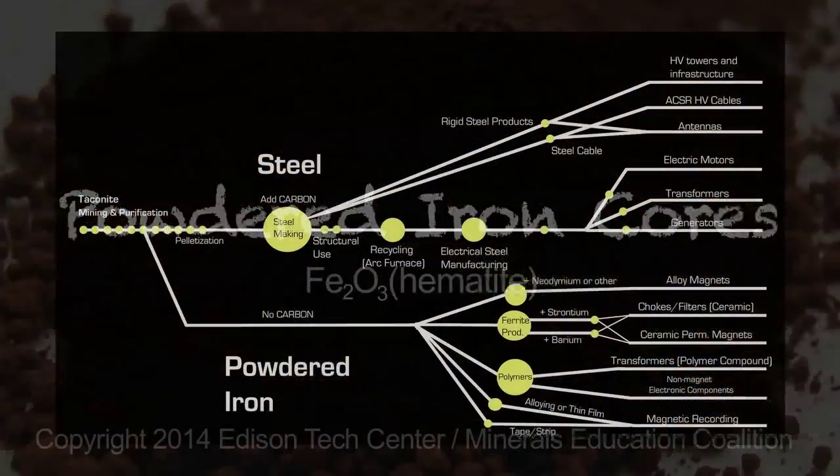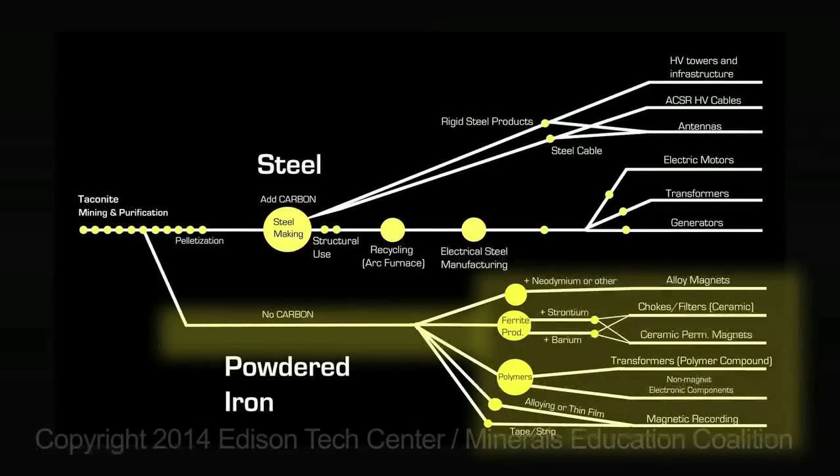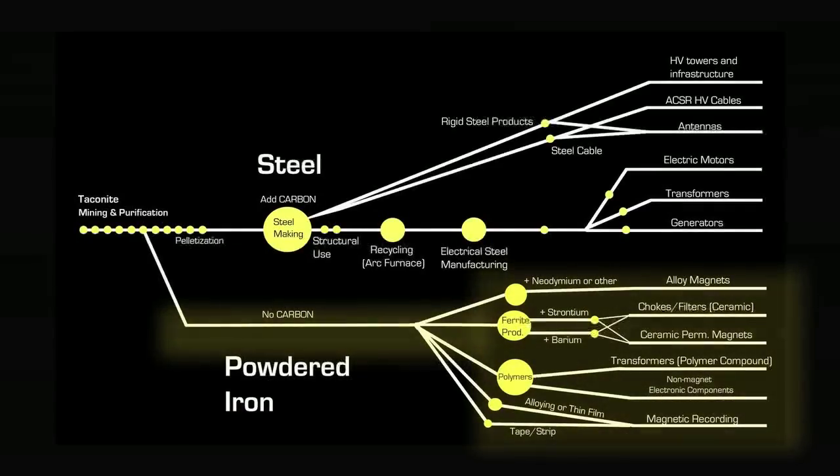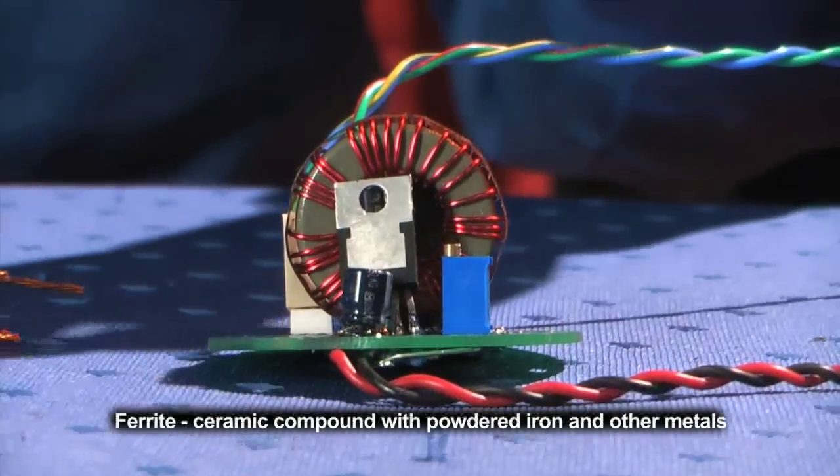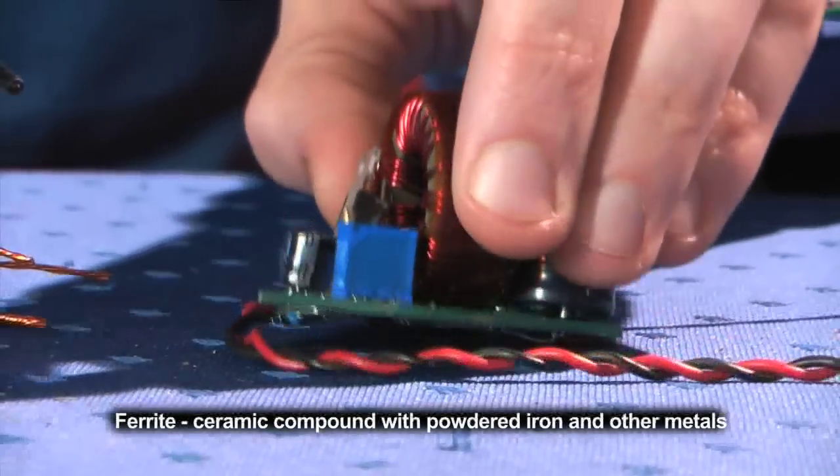Another use for iron is powdered iron. Now this is similar to ferrite, however it is just iron broken up and mixed into a polymer and then compacted together to form a torus here.